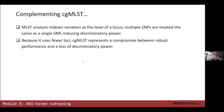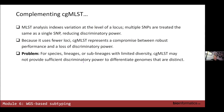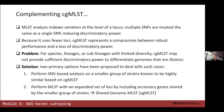We're almost at the end. I mentioned that cgMLST is not the greatest when it comes to resolution or discriminatory power, especially because we've had to toss away all these accessory genes that can represent a significant proportion of the genome. Ultimately we've sacrificed discriminatory power for robustness in going only with core genes.